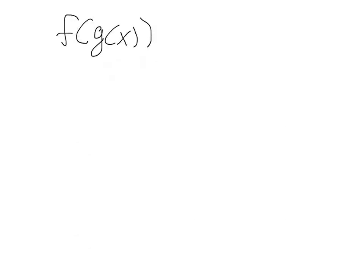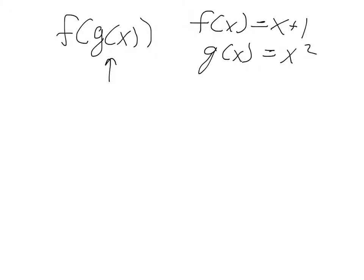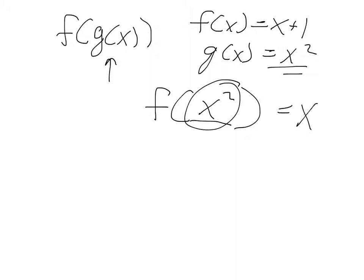To solve these problems, if you have f of g of x, you first have to find g of x. Say it gives you f of x equals x plus 1, and g of x equals x squared. And they say find f of g of x. What you're going to do is rewrite it as f of x squared — substituting what g of x actually is. Since f of x is x plus 1 and x squared is your new x, you get x squared plus 1. Wherever you see x in this equation, you substitute with g of x, which is x squared. So you get x squared plus 1.